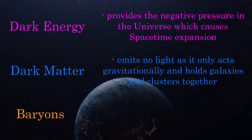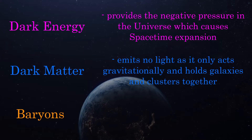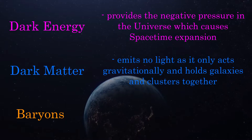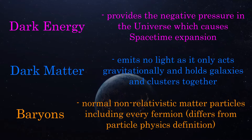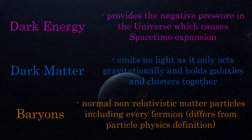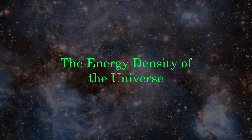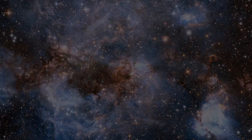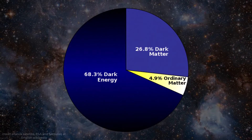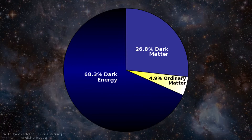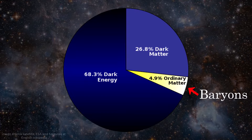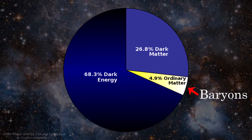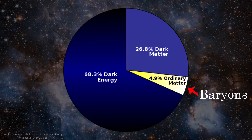In particle physics, baryons are particles which contain three quarks, like protons and neutrons. But in cosmology and astrophysics, baryon typically refers to all matter particles, including other fermions such as electrons and non-relativistic neutrinos. Our current best estimates for the proportions of these energy densities in the universe comes out as around 68% dark energy, 27% dark matter, and only 5% baryons. This means only 5% of the energy in the universe has manifested as baryons, which is what makes up everything we see and typically interact with in our normal lives and can observe directly in space using telescopes.